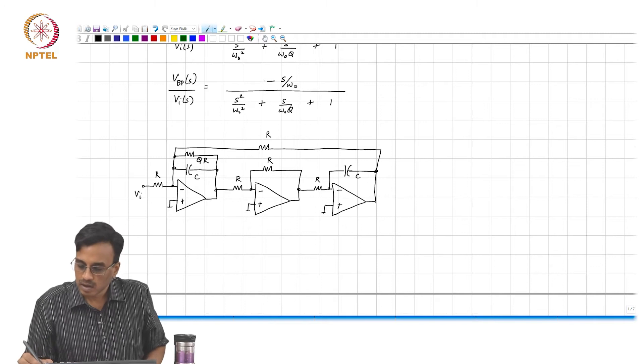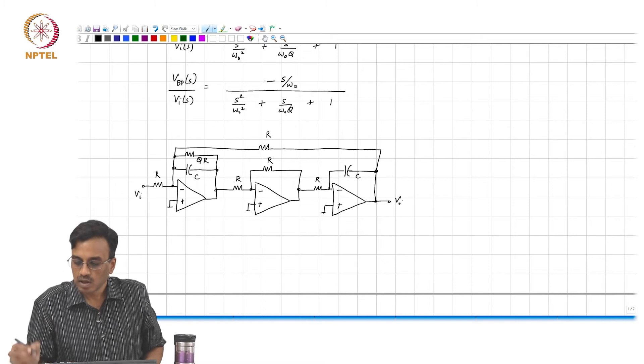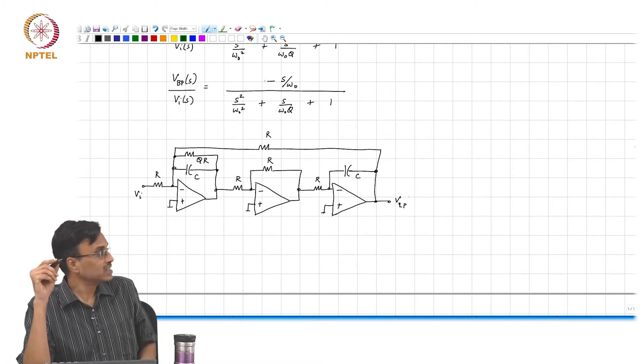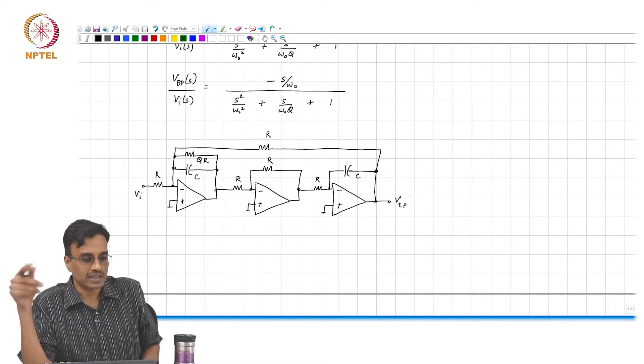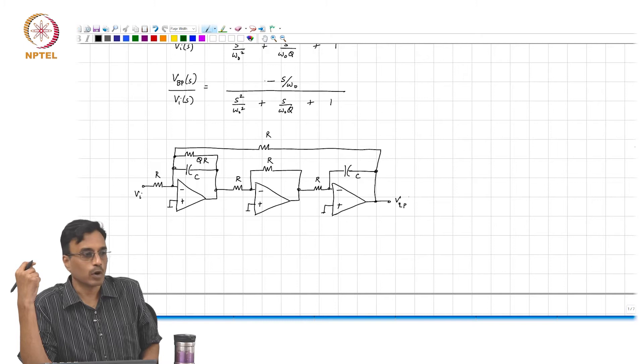Remember, if this is the input and this is the output which we call v l p, the voltage transfer function is an inverting low pass transfer function. Now, if we form the inter-reciprocal network, what would we do to form the inter-reciprocal network?